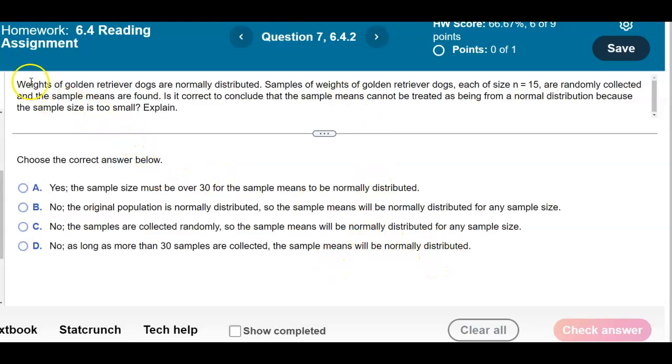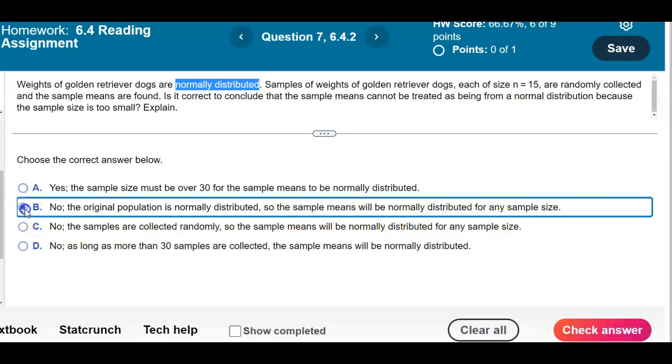The thing we need to look at first is the first part of the sentence. It tells us at the beginning that the weights of those golden retrievers are normally distributed. Once we see that, we can say that the original population is normally distributed, and if that's the case, then the sample means will be normally distributed for any sample size. So the answer is B.